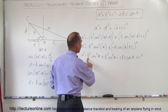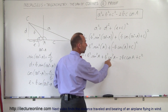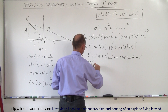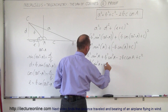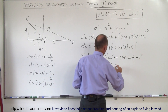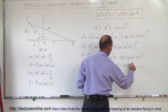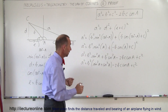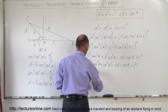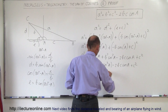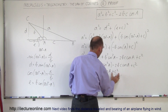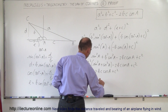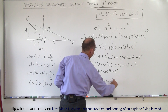Notice we have B squared times sine squared of A plus B squared times cosine squared of A, so we can factor out B squared. We get a squared equals B squared times the quantity sine squared of A plus cosine squared of A, minus 2Bc times the cosine of A, plus c squared. Since sine squared of A plus cosine squared of A equals one, this becomes a squared equals B squared minus 2Bc times the cosine of A plus c squared. Rearranging the terms: a squared equals b squared plus c squared minus 2bc times the cosine of A.